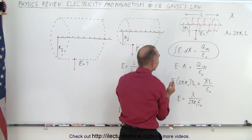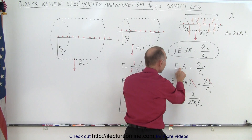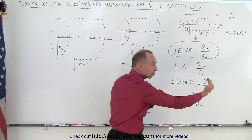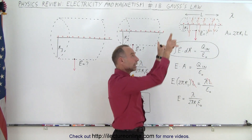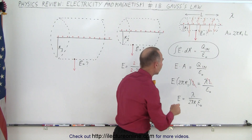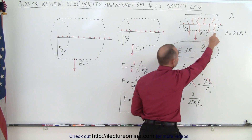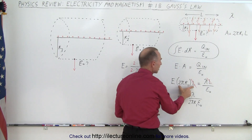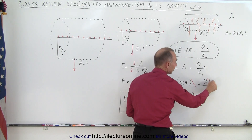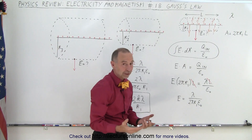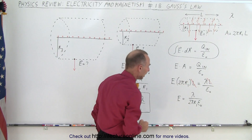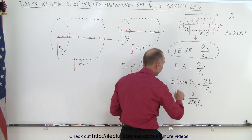This integral is simply the strength of the electric field multiplied by the surface area of the Gaussian surface — in this case only the side, since there's no electric field going through the edges, only outward in a 360-degree direction. So the area is the circumference times the length, which is the surface area of the side of the Gaussian surface. Multiplying by the electric field strength equals the charge inside — the linear charge density times the length divided by epsilon sub naught. The length cancels on both sides, so it doesn't matter how long we made the Gaussian surface.